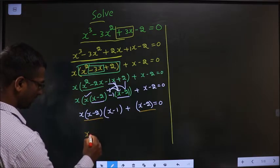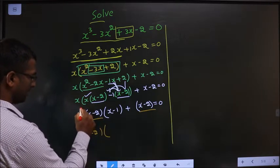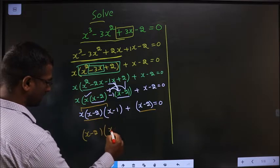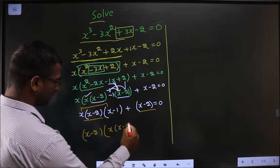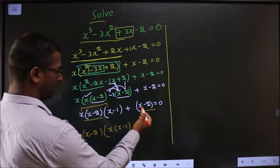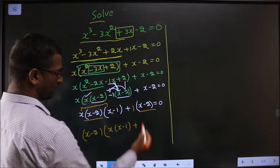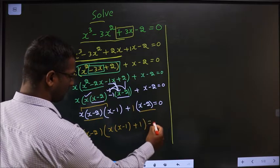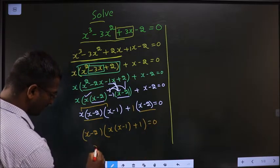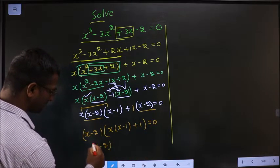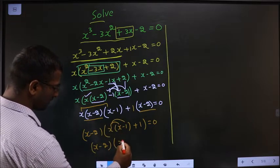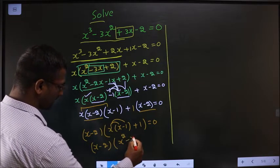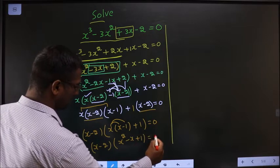So what do you get? Here left with these two things: x, x minus 1. And here it is gone outside means leaving you 1. So 1 equal to 0. So now x minus 2 multiply, so x square minus x plus 1 equal to 0.